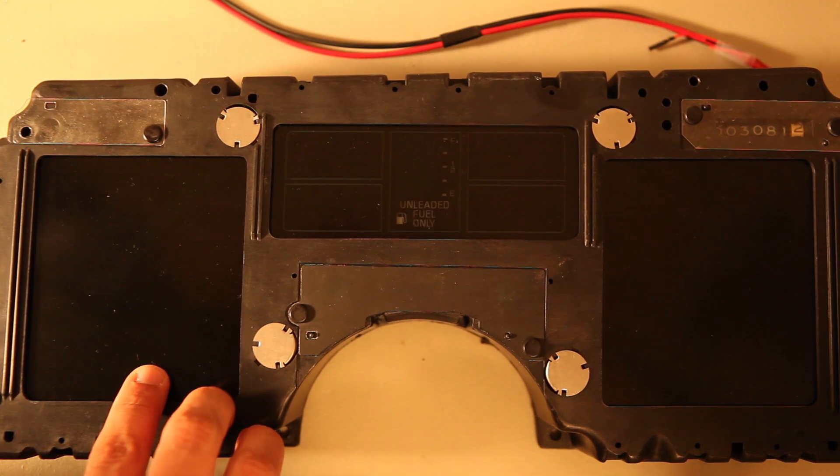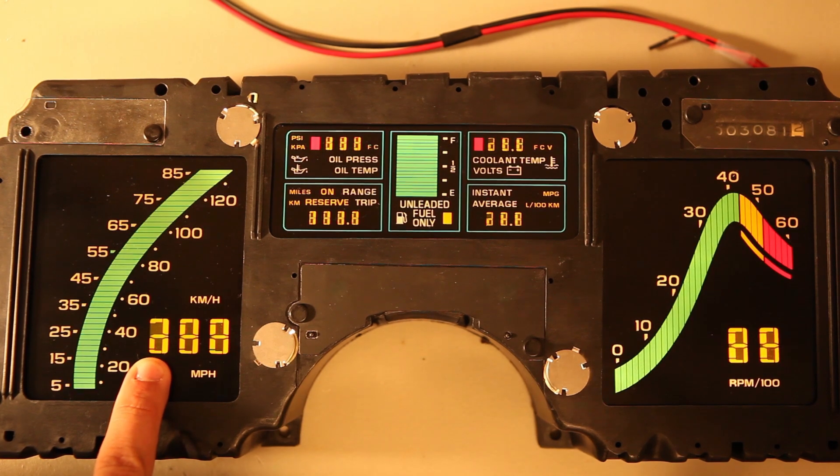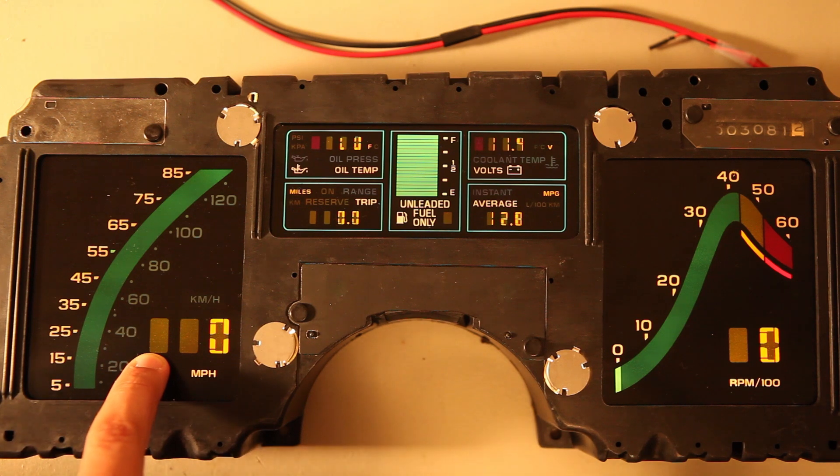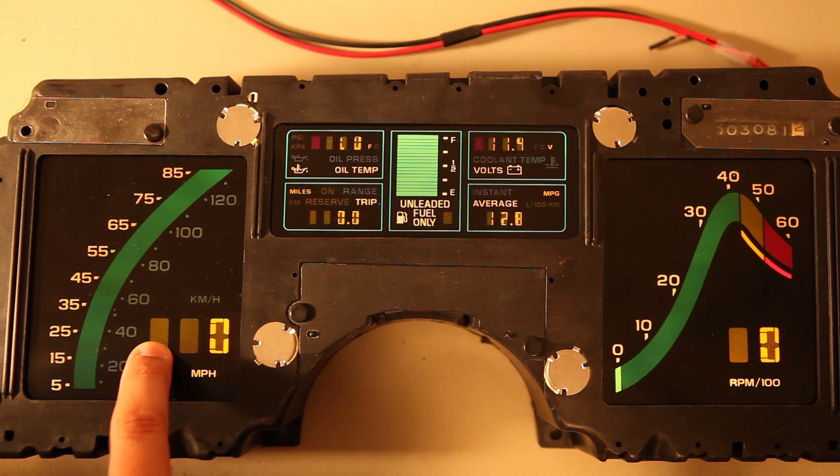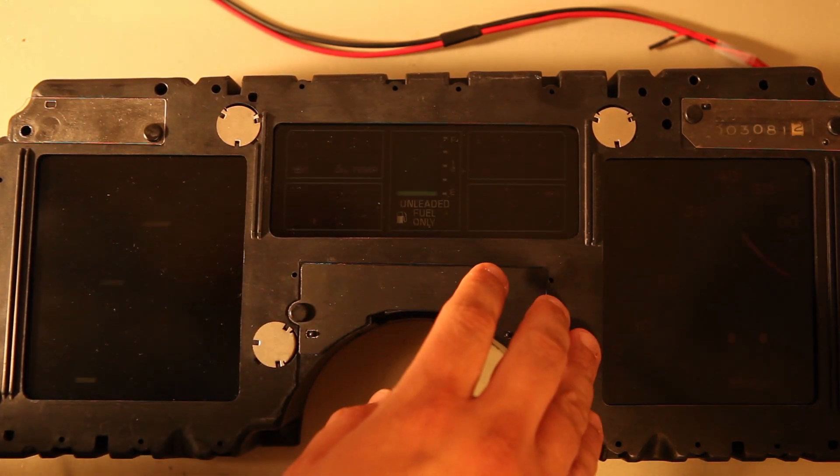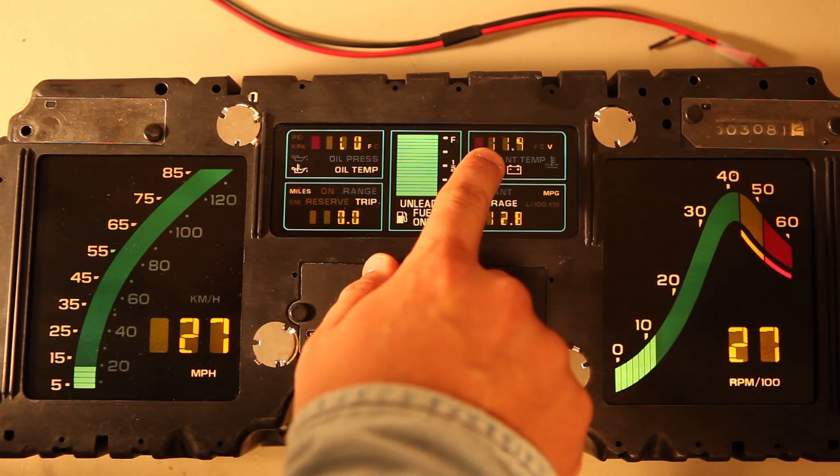Some of the numbers, like this one, don't display all seven segments. They only display six segments, and that's because this digit only needs to display a one or a two. This is also the case here and here.